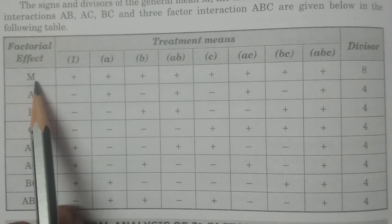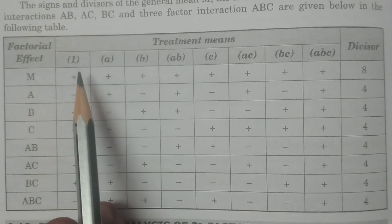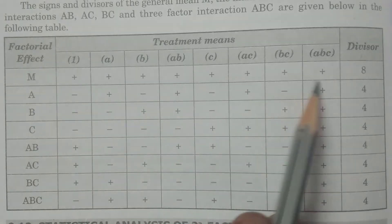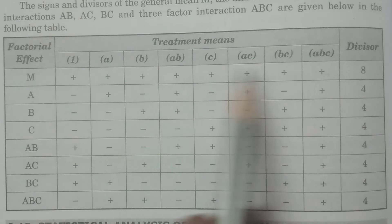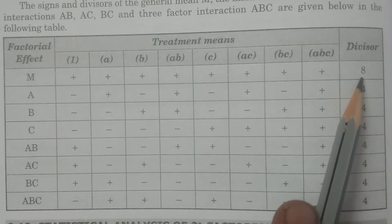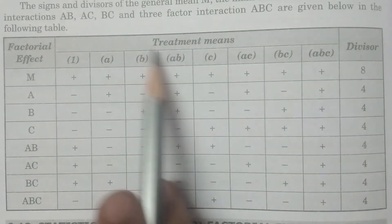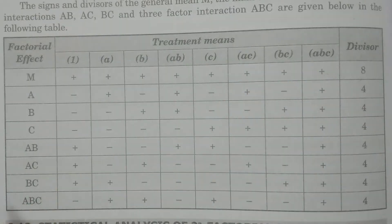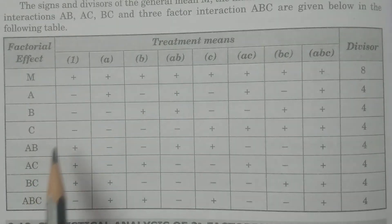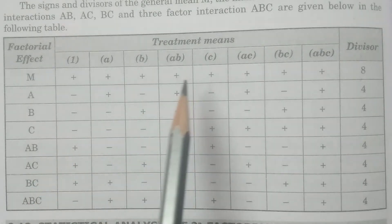That factorial effect — first it is mean yield M. All treatments are having the positive signs, and the divisor is 8. So these are the 8 treatment means: 1, A, B, AB, C, AC, BC, ABC — 8 treatment combinations, all having positive signs for mean yield M.